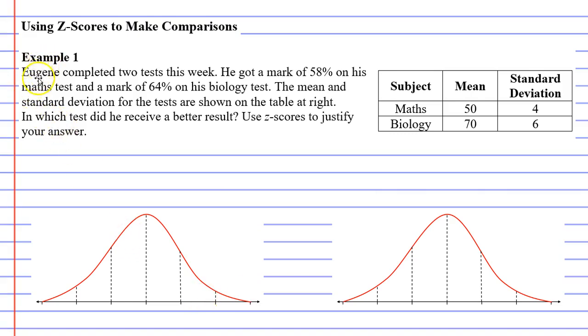So in example 1, it says, Eugene completed two tests this week. He got a mark of 58% on his maths test, and a mark of 64% on his biology test. The mean and standard deviation for the tests are shown on the table at right. In which test did he receive a better result? Use z-scores to justify your answer.